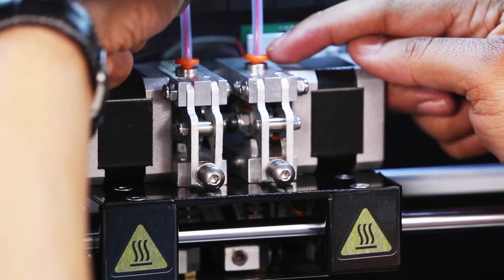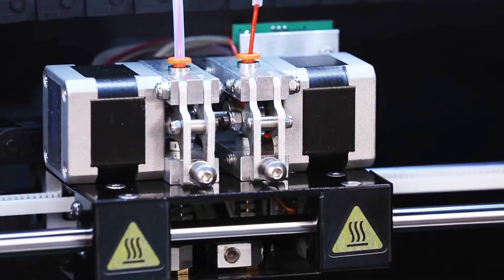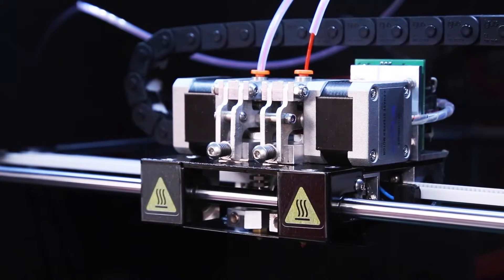First manually remove the plastic tube from above the extruder head by pressing the orange washer down. Turn and pull the plastic tube upwards to release.